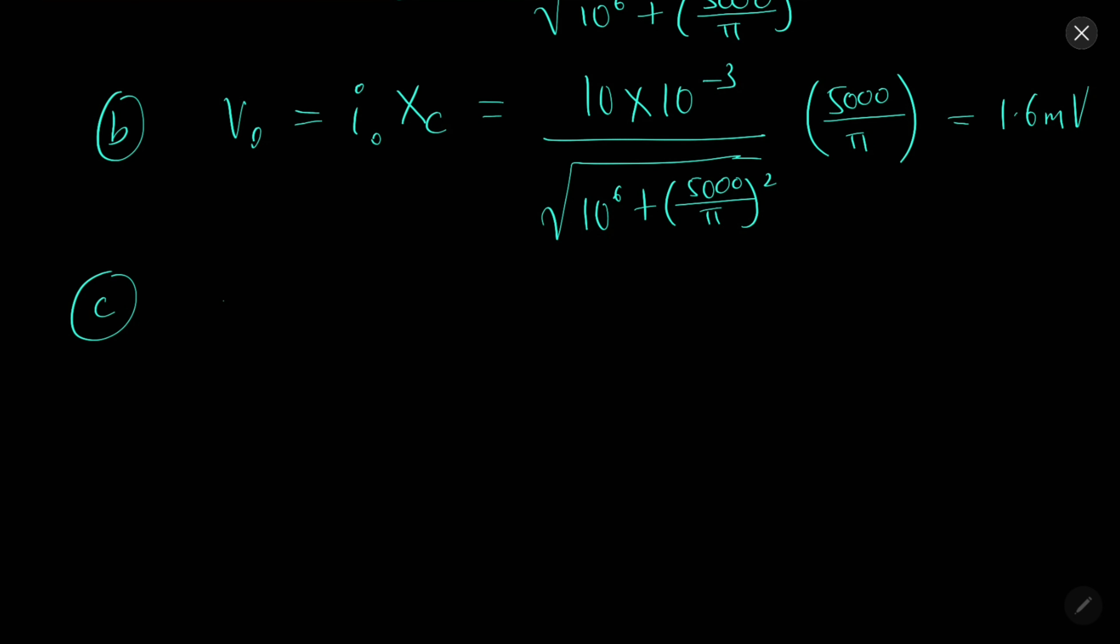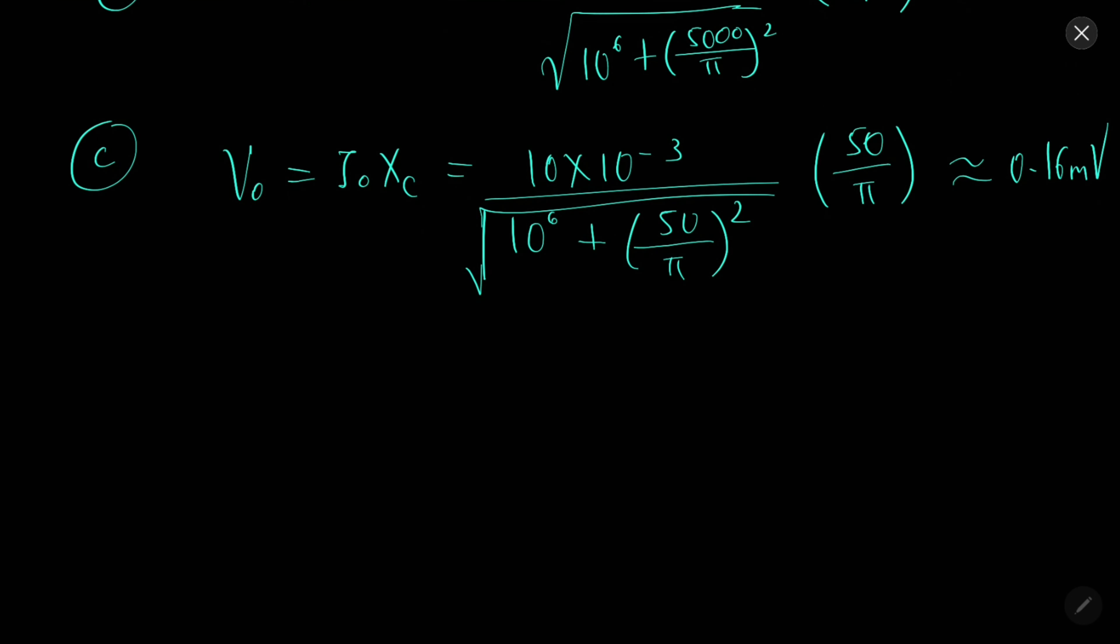Then V₀ in this scenario: again, I₀ will be 10⁻³ over root of 10⁶ plus 50 over Pi square. In this case it is 50 by Pi which is around 0.16 millivolt. And then V₀ equals I₀ into X_C. Here it will be 10⁻³ over root of 10⁶ plus 5 by Pi square, times 5 by Pi, which will give us around 16 microvolt.